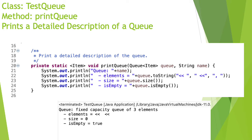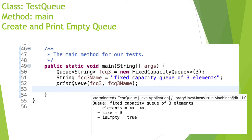We'll start by creating a method that will print a more detailed description of a queue. The method will receive a queue and the name for this queue, and we'll print the queue name, the list of elements starting with the first element added to the queue and ending with the last element added. Then we will print the size and check if the queue is empty or not.